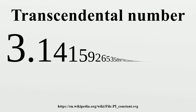For example, the square root of 2 is irrational but not a transcendental number, since it is a solution of the polynomial equation x² - 2 = 0. The name 'transcendental' comes from Leibniz in his 1682 paper where he proved that sin is not an algebraic function of x. Euler was probably the first person to define transcendental numbers in the modern sense.